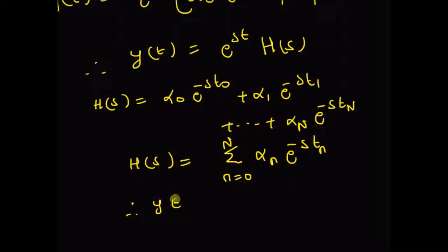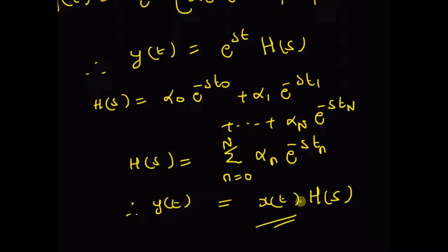The output y(t) is written in the eigenfunction form: x(t) multiplied by the transfer function H(s). Clearly, the input x(t) is an eigenfunction of this linear time-invariant system. Thus, the wireless communication channel causing a multipath effect can be represented in eigenfunction form such that y(t) = x(t)·H(s), and a Laplace transform can be used to characterize a wireless communication channel. Thanks for watching.